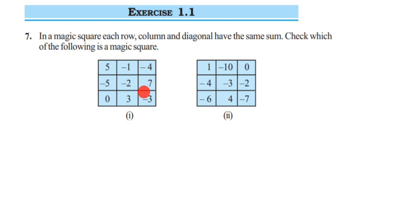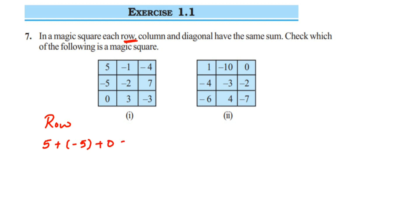Let's start with the first square. I want to find the row sums. In the first row we have 5 plus (−5) plus 0. You can see that 5 and −5 have opposite signs, so they cancel each other out — the sum is zero. The zero doesn't change the answer, so the first row sum is 0.